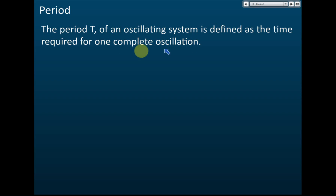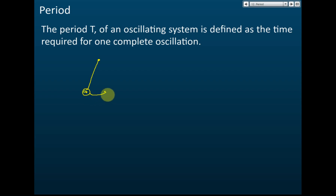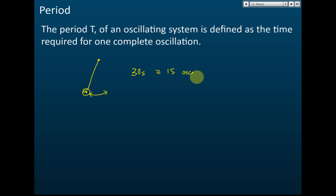Let's say we have a pendulum. This pendulum is oscillating left, right, left, right. If you use a stopwatch to measure the time for the oscillations, you'll find that this pendulum takes 30 seconds for 15 complete oscillations — one, two, three, and so on.